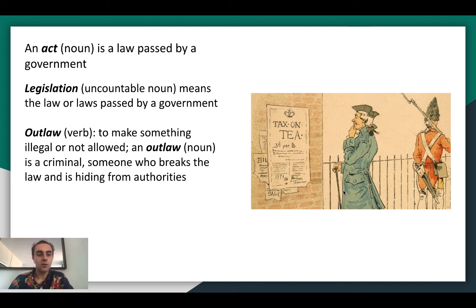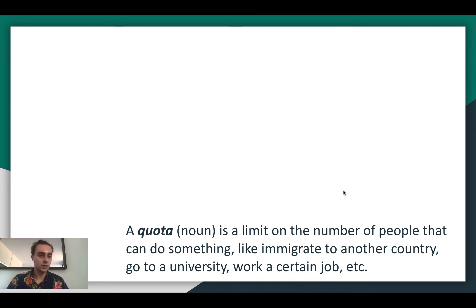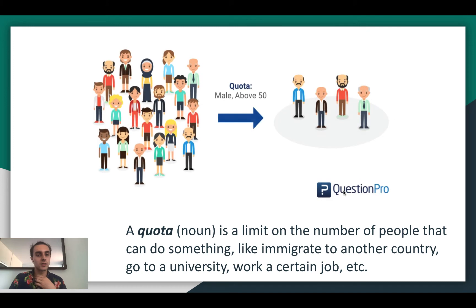An outlaw, as a noun, is a criminal or someone who breaks the law and is hiding from the authorities. A quota is a limit on the number of people that can do something — like immigrate to another country, go to a university, or work in a certain job. So it's a limit: we only allow a certain number of people to do something. For example, the quota might be only men who are above 50 — so we only let a limited number of people through.